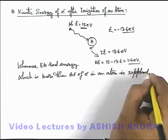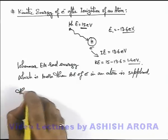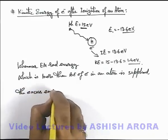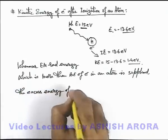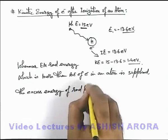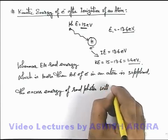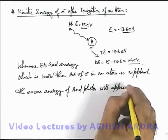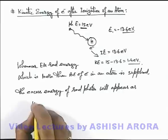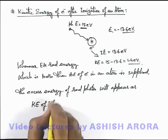the excess energy of radiation photon will appear as kinetic energy of ejected electron.